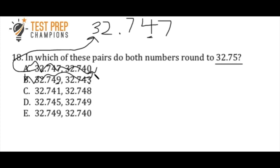So now we're down to C here, and we have 32.741 and 32.748. And so again, I'm going to go over this a little bit more quickly now. We look to the number directly to the right of the 4. It's less than 5, so this first number is not going to round up to 32.75. Therefore, we don't even need to check the second one.